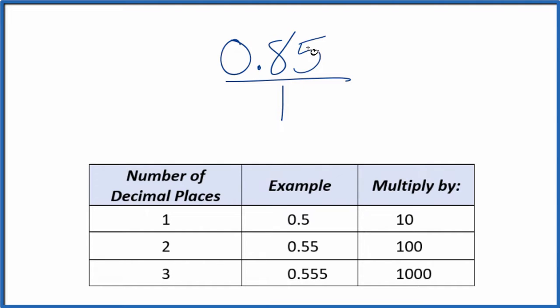What we need to do is get this decimal 0.85 to a whole number. We can do that by multiplying it by 100. That's because we have two decimal places. If we multiply by 100 when we have two decimal places, that'll give us a whole number.